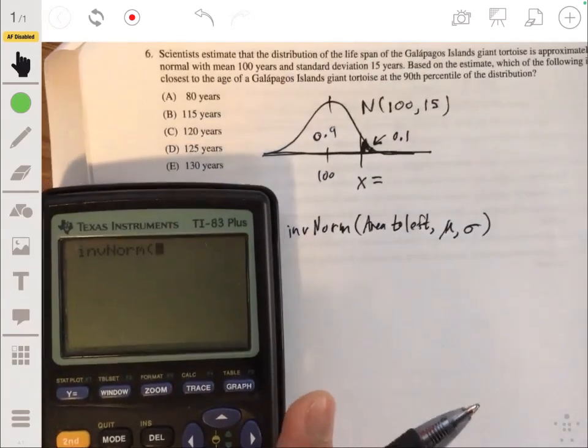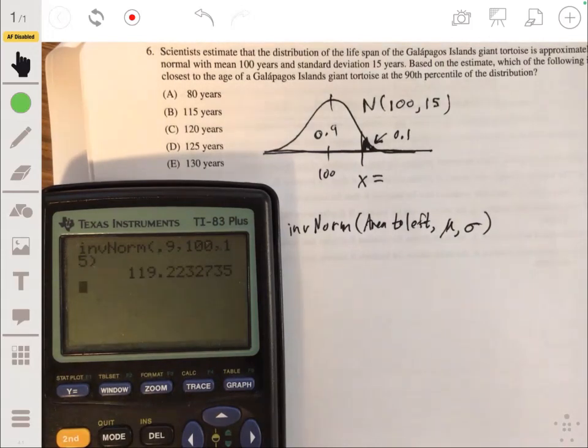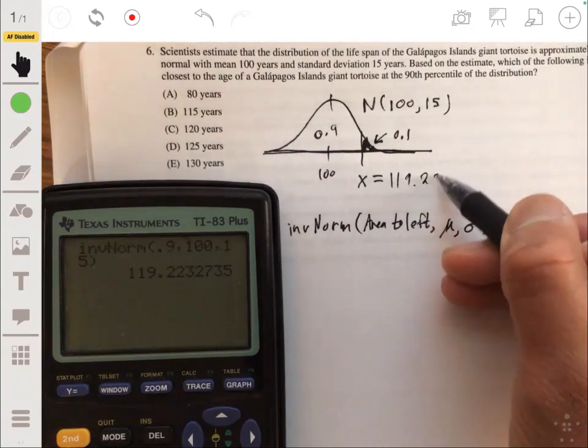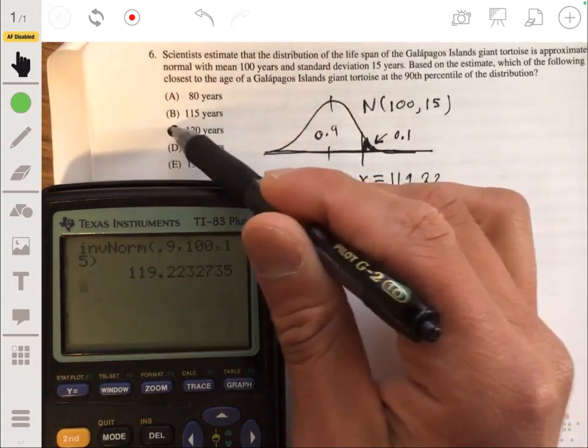So we're going to enter 0.9. The mean of this distribution is 100. Standard deviation is 15. And then from there, I get an x value of about 119.223. So then the answer will be C, because that's the closest value.